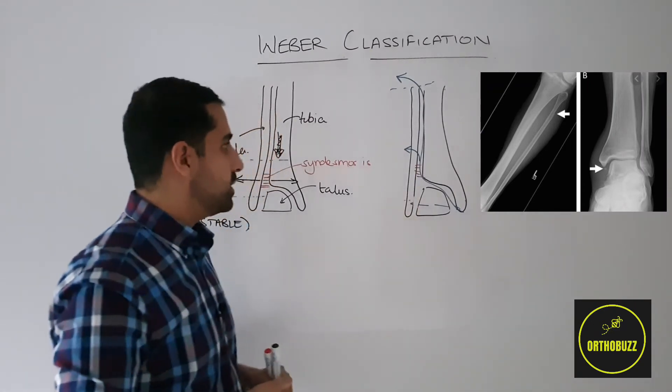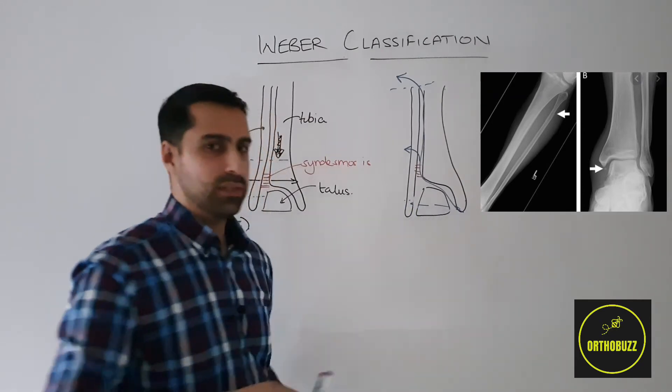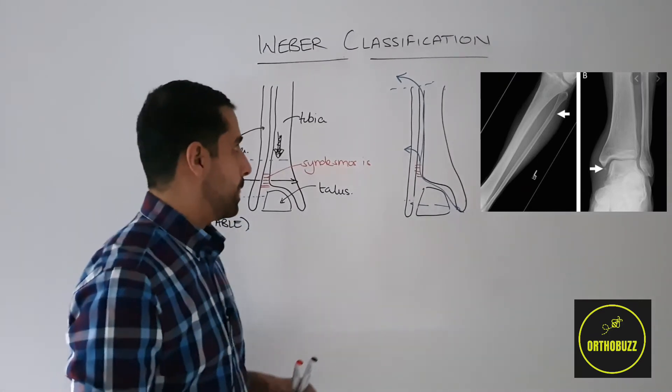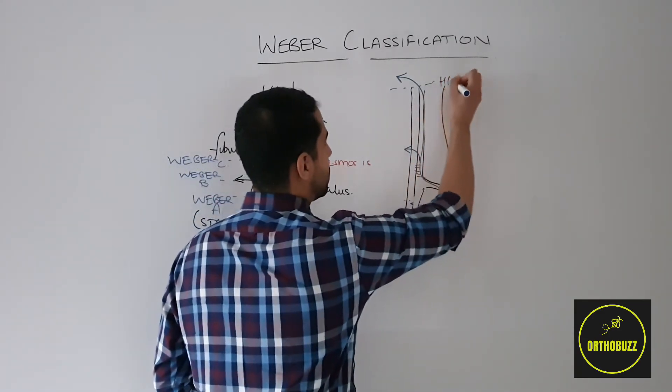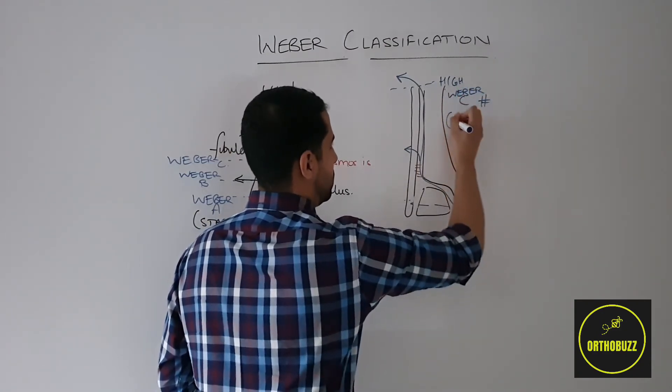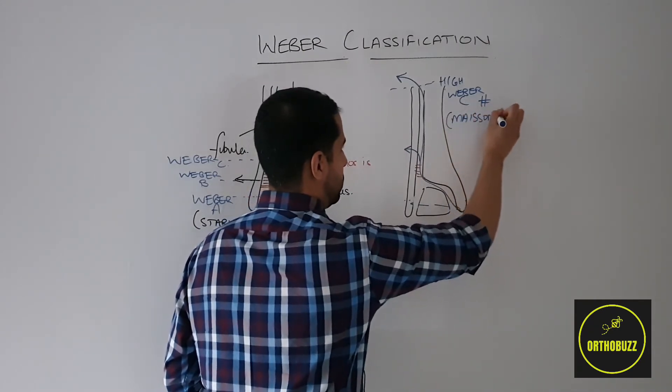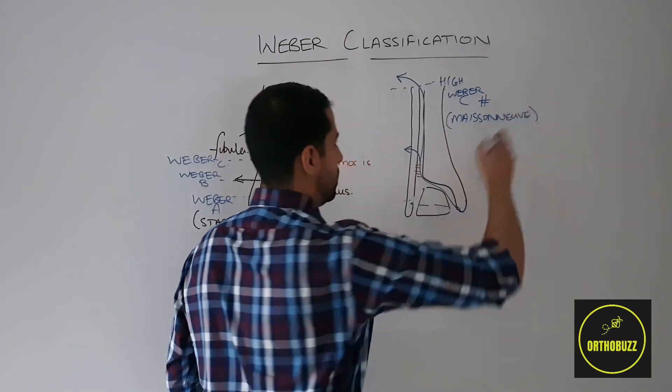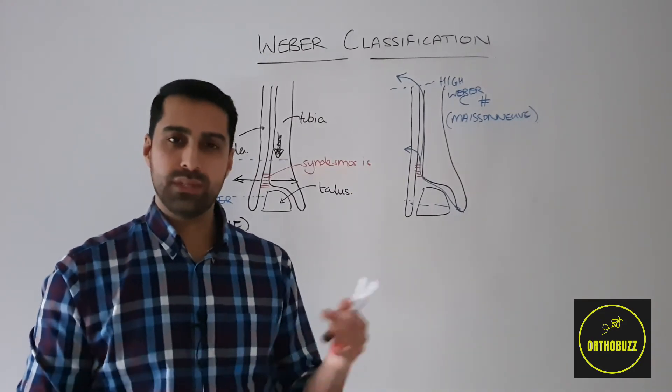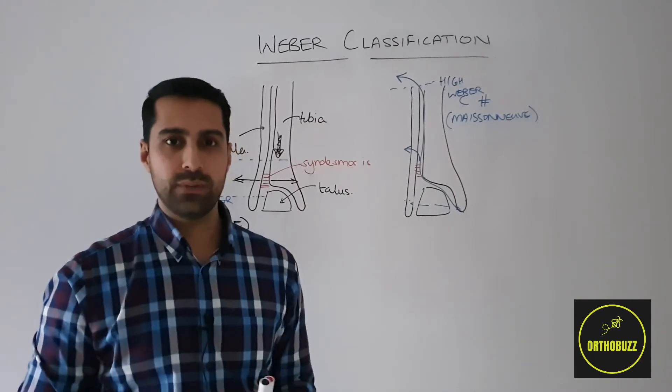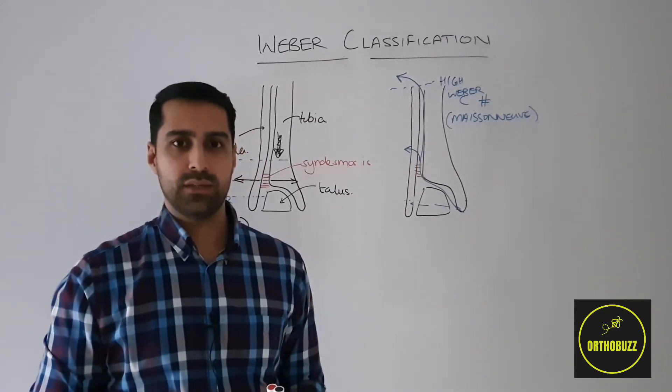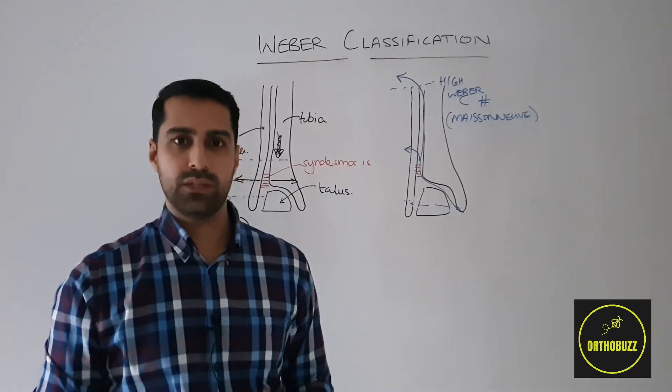Therefore, the syndesmosis is disrupted and this may cause us to have radiological abnormalities when we look at the ankle x-ray in relation to where the talus sits in the ankle joint. This is known as a high Weber C fracture or also termed a Maisonneuve fracture. We still need to stabilize the syndesmosis as this is a Weber C ankle fracture and therefore an unstable injury, although we would not need to fix the fracture this high as this would require further dissection and would be a lot of risk compared to the benefits.